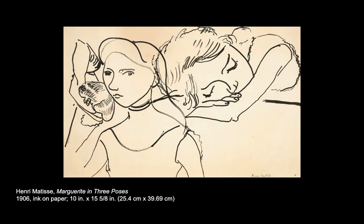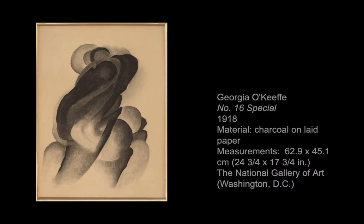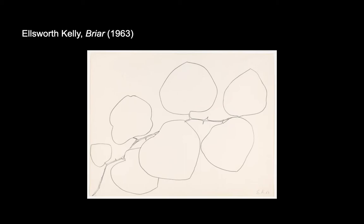If you look closely you will see all three versions of Marguerite on the picture plane. This is an abstract drawing made by the American artist Georgia O'Keeffe, titled Number 16 Special. O'Keeffe created this work using charcoal on paper. Even though the subject matter is abstract and we cannot name what it is a drawing of, she has used different values to create the feeling of volume and mass. By contrast, this is Ellsworth Kelly's Briar from 1963. Kelly has edited out most of the information of his subject — we see the silhouette of the Briar and that's about it. There's no value; it is a simple contour line drawing of the subject.